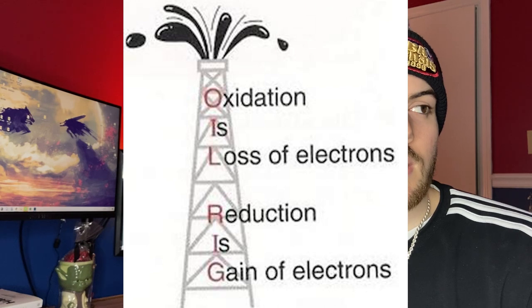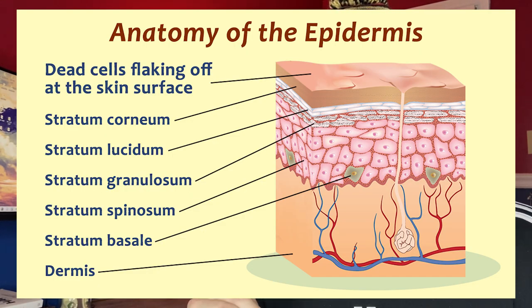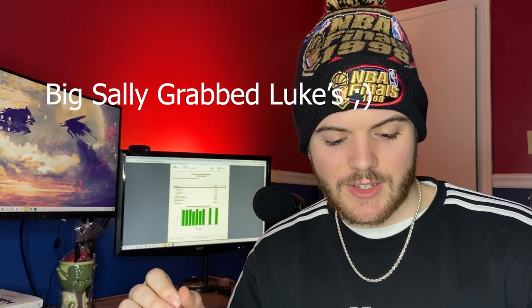Let's talk about the integumentary system. You need to know the five skin layers: stratum corneum, stratum lucidum, stratum granulosum, stratum spinosum, and the stratum basale. The way I remembered this is 'Big Sally Grabbed Luke's Corn' — I know it's a bit unusual, but that's how I remembered it.